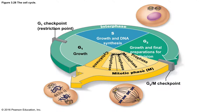The mitotic phase consists of prophase, metaphase, anaphase, and telophase. A mnemonic you can use is PMAT — P for prophase, M for metaphase, A for anaphase, and T for telophase. Finally, you have cytokinesis, where the cell divides into two daughter cells that pull apart from one another.